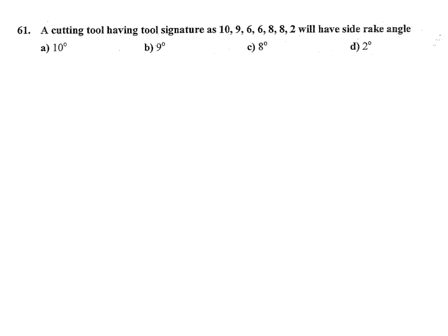A cutting tool having tool signature at 10, 9, 6, 6, 8, 8, 2 will have side rake angle. In cutting tool we are having first back rake, then side rake, end clearance, then side clearance.